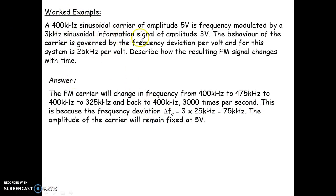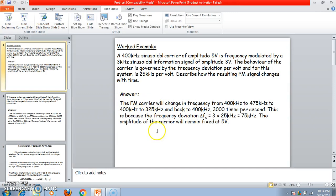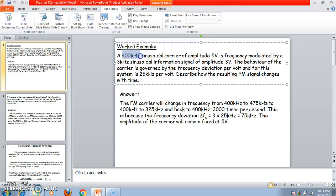In this video we'll see worked examples of FM modulation. The problem statement: a 400 kilohertz sinusoidal carrier of amplitude 5 volts is frequency modulated by a 3 kilohertz sinusoidal information signal of amplitude 3 volts. The frequency deviation sensitivity for this system is 25 kilohertz per volt. So 400 kilohertz is the carrier signal with amplitude 5 volts, 3 kilohertz is the message signal with amplitude 3 volts, and FM frequency deviation is 25 kilohertz.